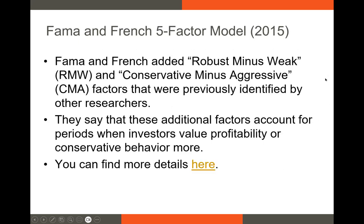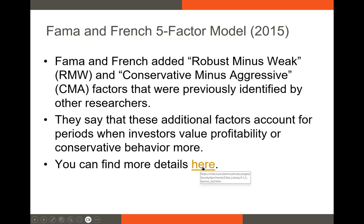The five-factor model adds two additional variables: the robust minus weak (RMW) variable identified by previous authors, and the conservative minus aggressive (CMA) factor identified by other researchers. Fama and French basically took those anomalous variables identified by other researchers, constructed factors from them, and added those two additional factors to their three-factor model to build a five-factor model. If you're curious about how those factors are constructed, click the link to see the details.